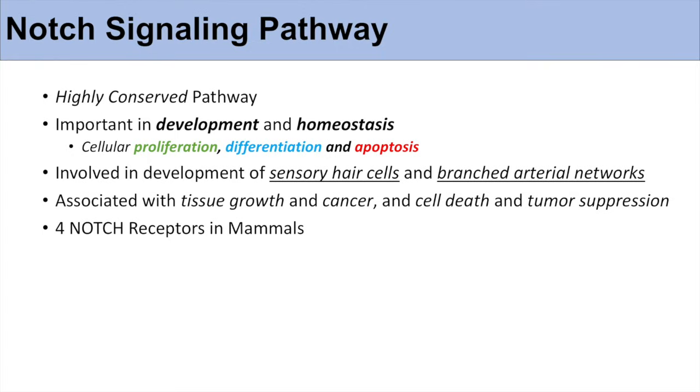The name of the pathway, notch signaling pathway, comes from the notch receptors. And there are actually four notch receptors in mammals: Notch 1, Notch 2, Notch 3, and Notch 4.